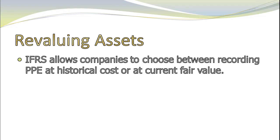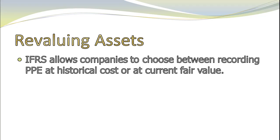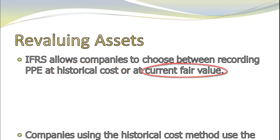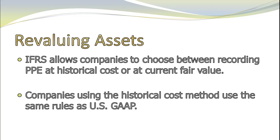Basically, IASB is going to allow companies to choose. You can record your property, plant, and equipment at its old historical cost, or you can start recording it at its fair value. If they use the historical cost method, then the rules stay the same as what we discussed under US GAAP — you record the value you originally put into the asset as its historical cost, what you capitalized, and then you depreciate the asset slowly over time as you use it.